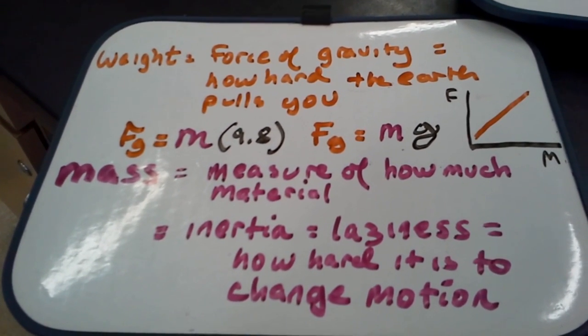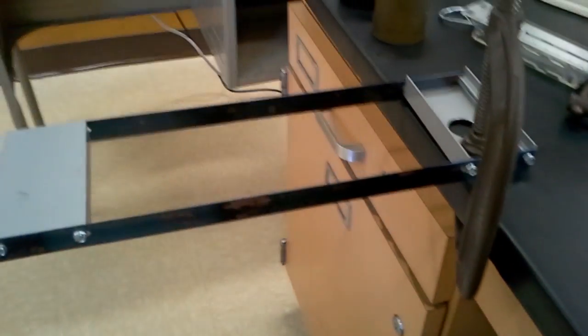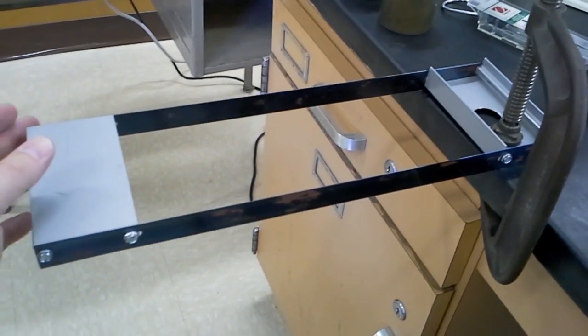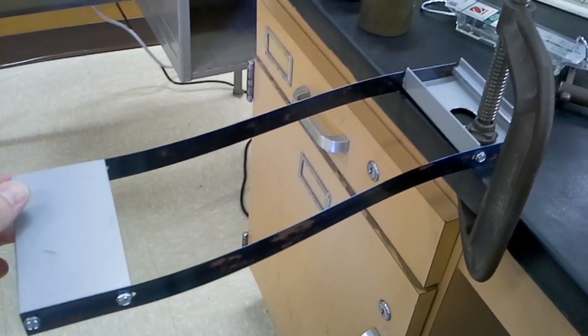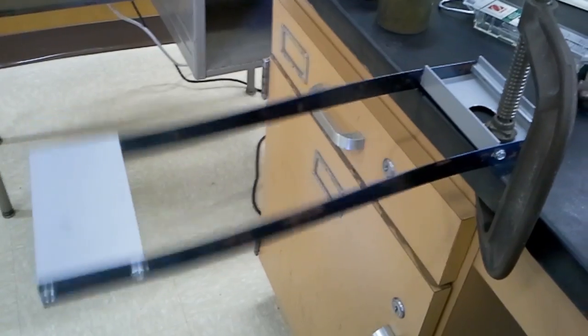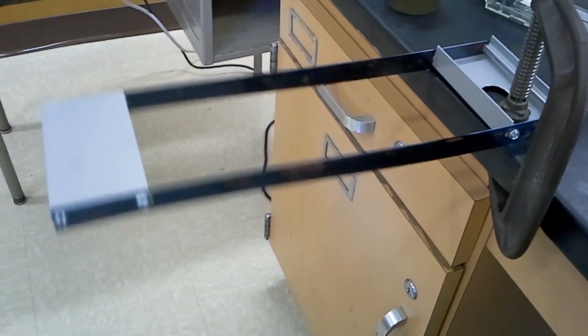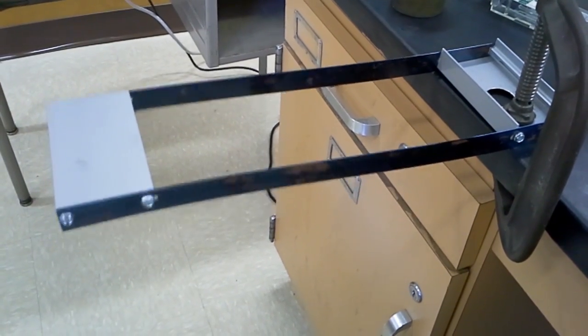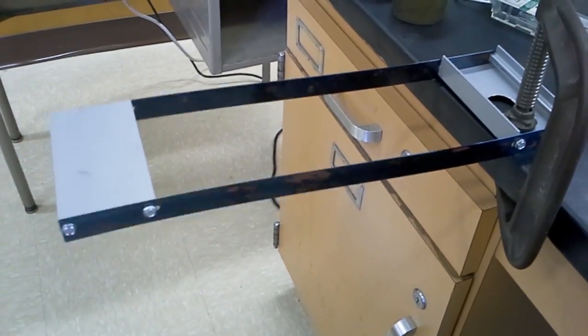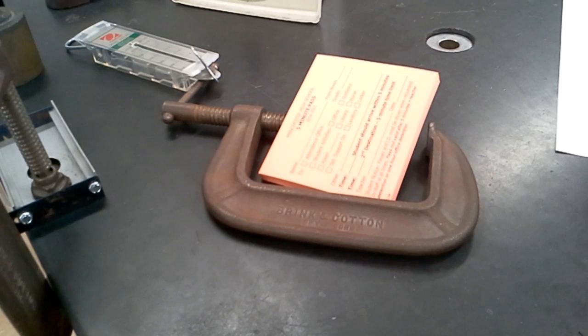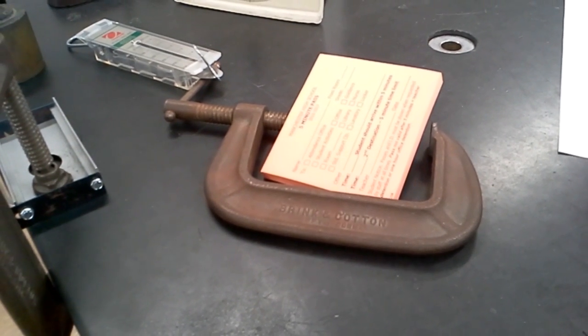In order to demonstrate what mass means, I've got this device here called an inertial balance. It's basically just a couple of pieces of metal held together by hacksaw blades. When I give it a push and let it go, it vibrates back and forth really quickly. The hacksaw blades are able to accomplish this because it's not very lazy. It doesn't have a lot of mass, and it's really easy to change its motion. What I'm going to do is put this C-clamp on it, which is going to give it more mass and more inertia, and we'll see what effect that has on its motion.